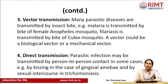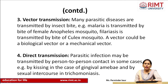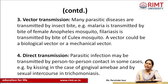Vector transmission — many parasitic diseases are transmitted by insect bite. For example, malaria parasite: the mosquito bites a human and transmits the infection to a new healthy person. Malaria is transmitted by the bite of the female Anopheles mosquito, and filariasis is transmitted by the bite of the Culex mosquito. A vector can be a biological vector or a mechanical vector.